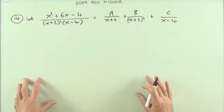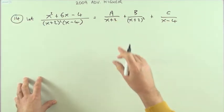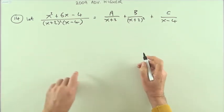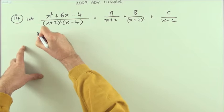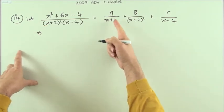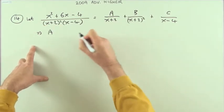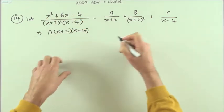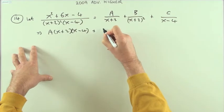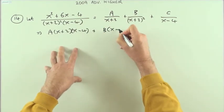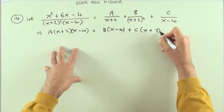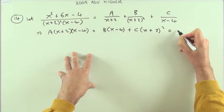Then multiply through. Now, this is meant to be an identity—these two sides are identical. That's how you're going to find A, B, and C, by equating coefficients either directly or by numerical substitutions. So I've got this arrangement multiplying out. I'll have A being multiplied by (x+2)(x-4).